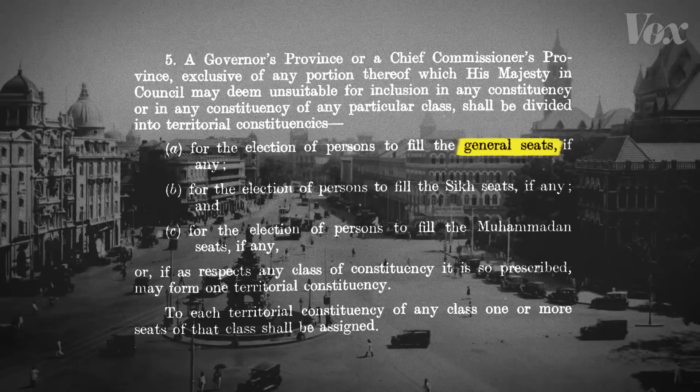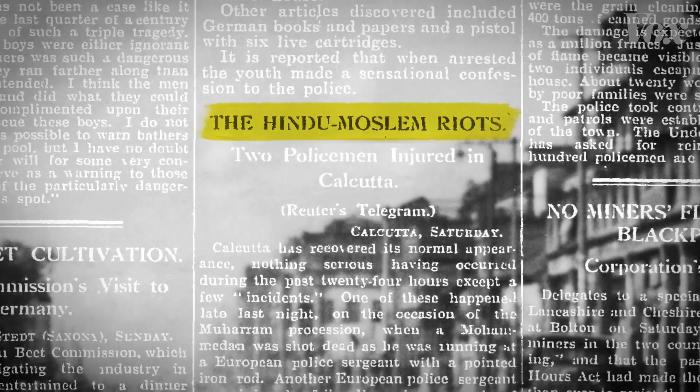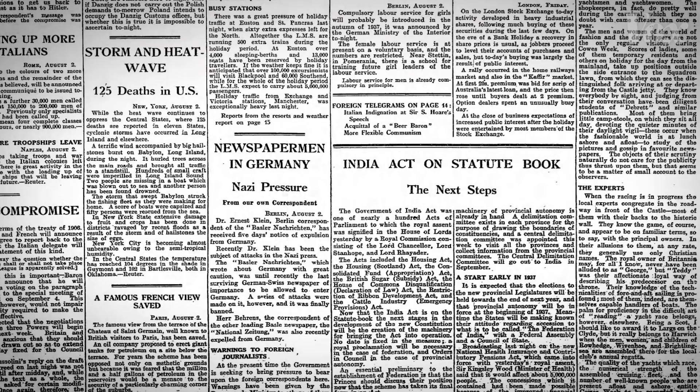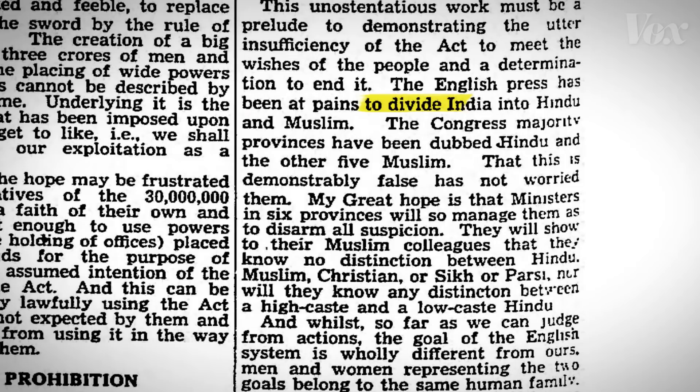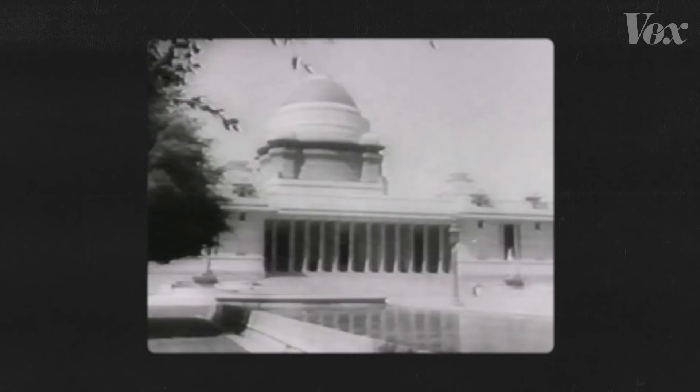This included Hindus, who got general seats, along with Sikhs and Muslims. Hindus and Muslims in particular had been at odds at other points in British India's history. But the act created even more division through assigned seats for religious groups. It was all part of the British divide and rule strategy.